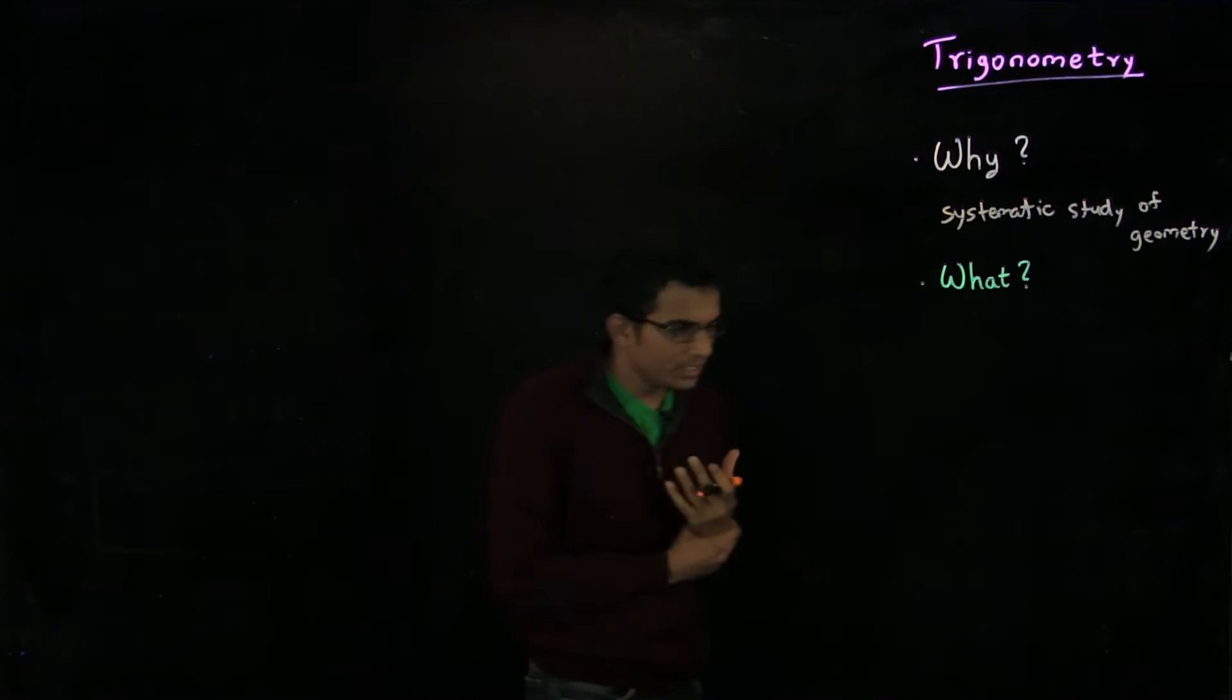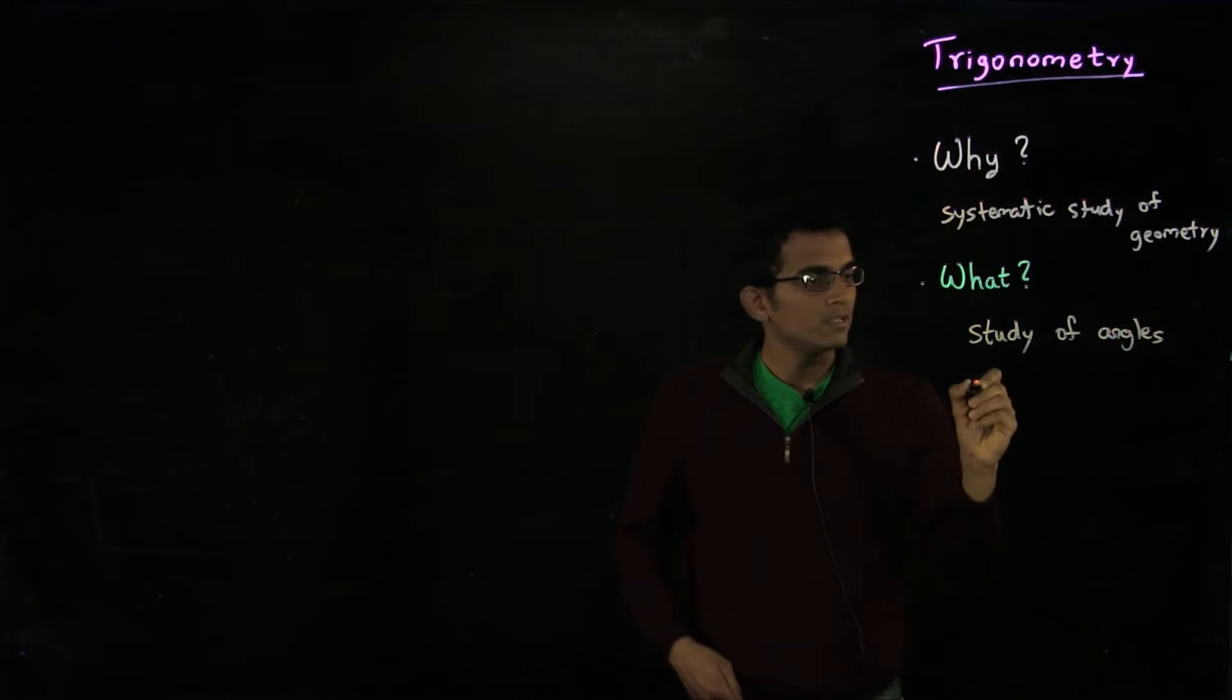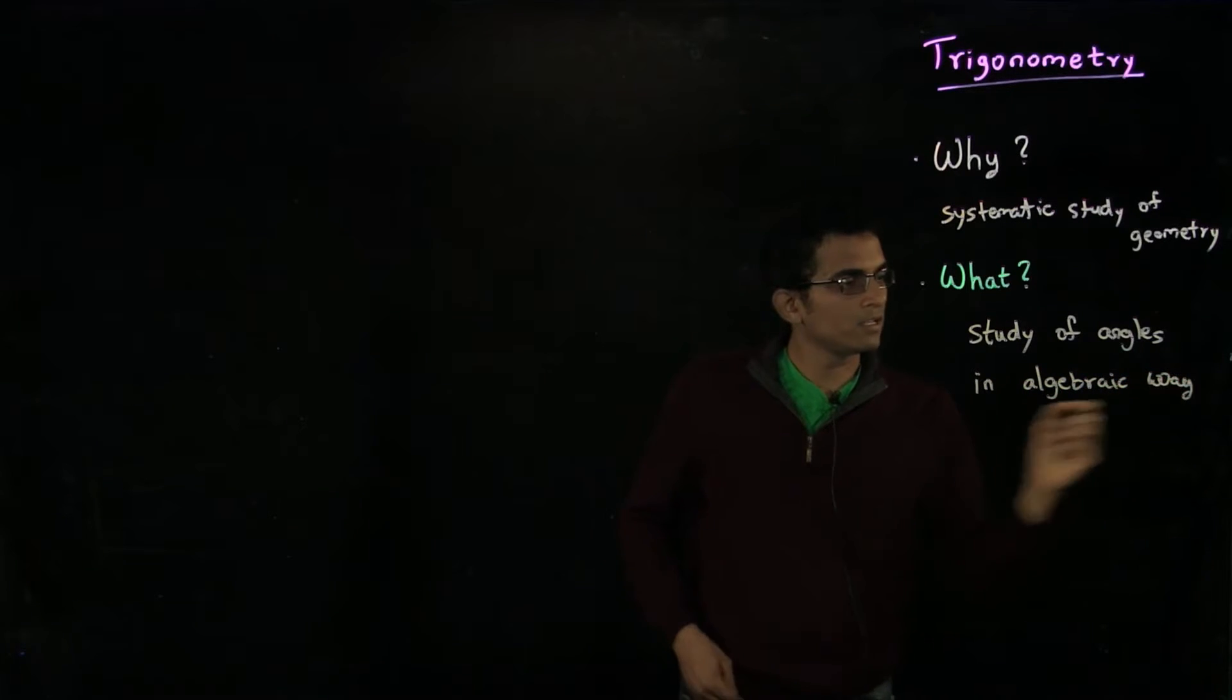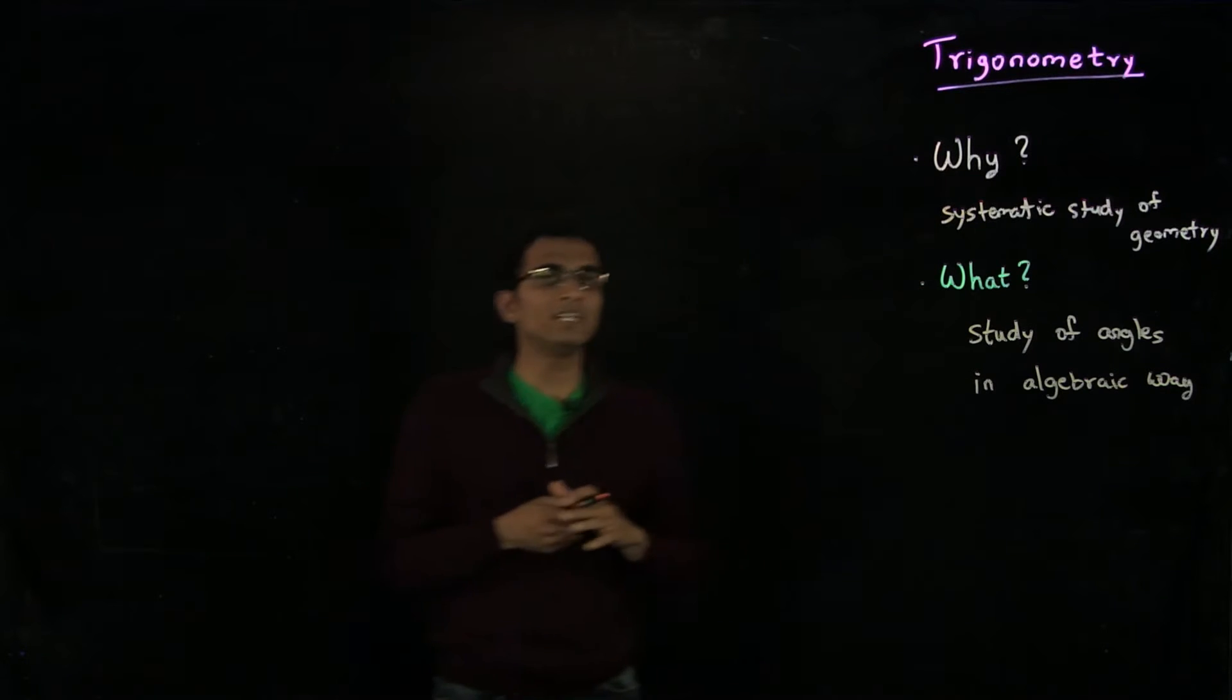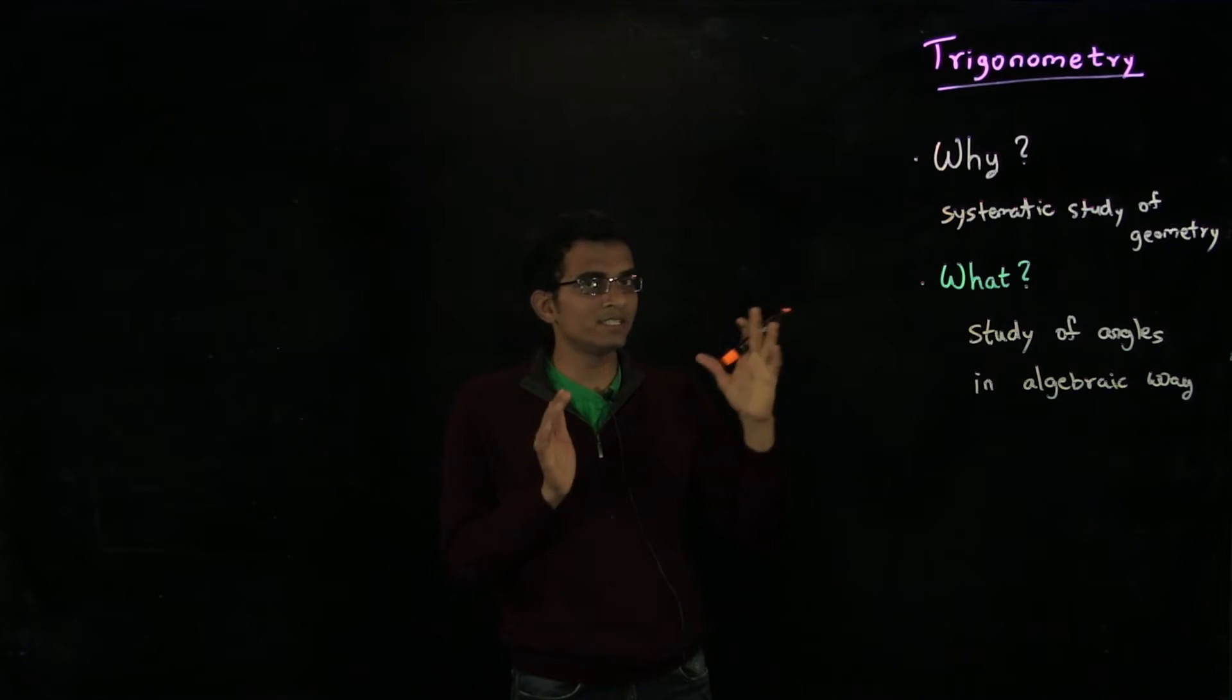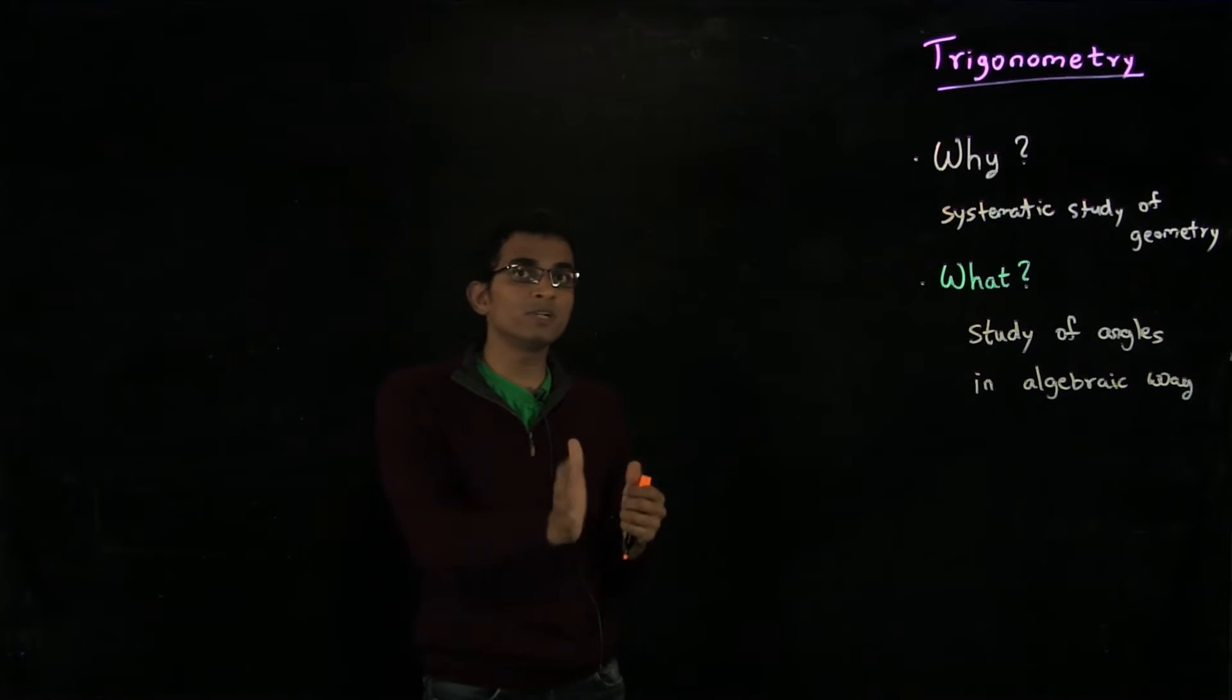And what is trigonometry? Trigonometry is about a study of angles in an algebraic way. You would feel more comfortable doing algebra. Algebra is often something you can do in a more mechanical way, whereas geometry often requires a sort of innovative leap. Using trigonometry, you will be able to reason about geometric problems in a more algebraic way.